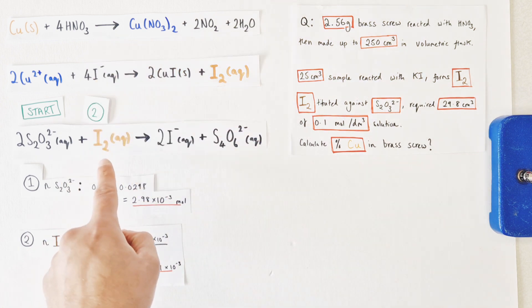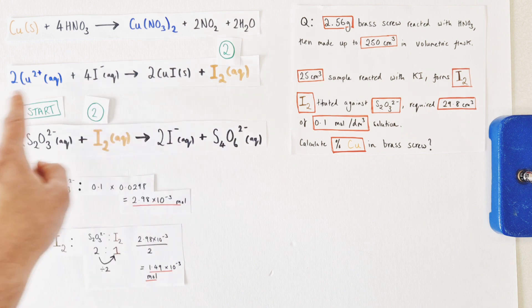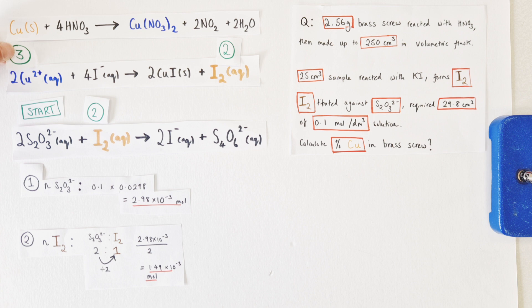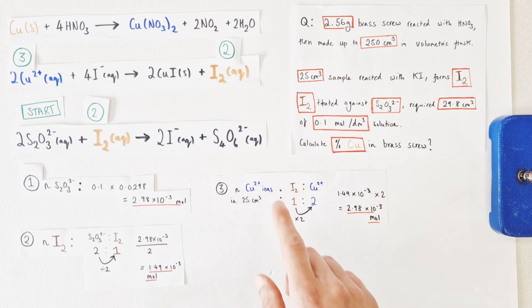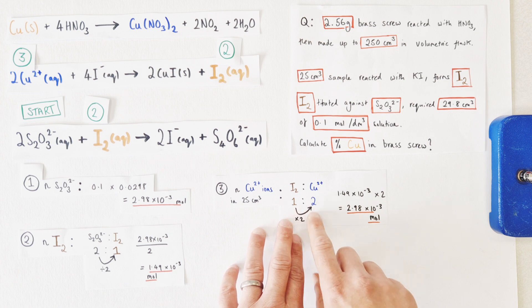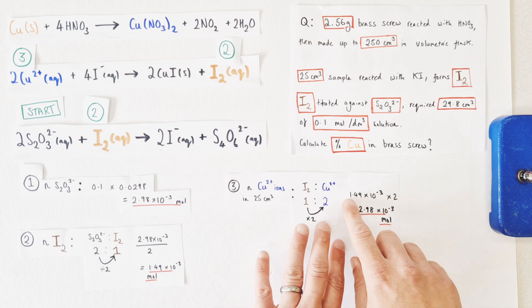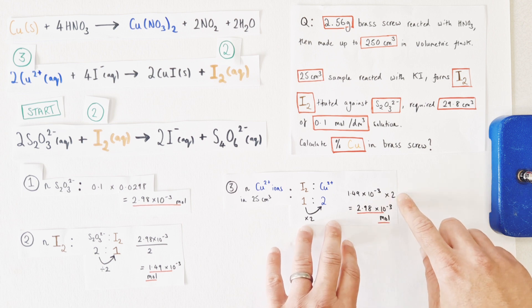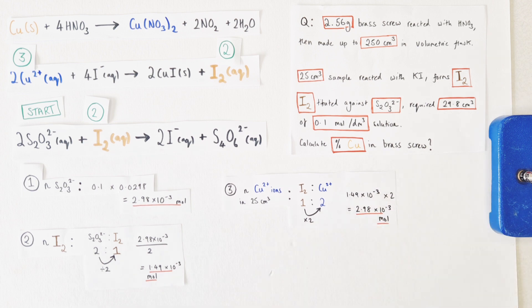Now of course all of that iodine was generated by the previous reaction. That's where it came from. So we also know the amount of moles of iodine here in the previous reaction, working our way back through the back titration. We can then relate that to the moles of copper ions by applying the molar ratio, which in this case is a one to two ratio. So if we have a one to two ratio of iodine to copper 2+ ions, to get from that one to two is a multiplication of two. So if we multiply our number of moles of iodine by two, we find that we would have had 2.98 times 10 to the minus three moles worth of copper ions present in our 25 centimeter cubed sample.